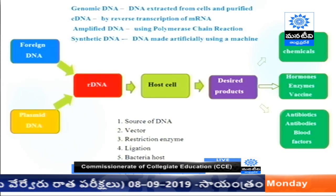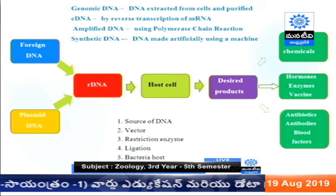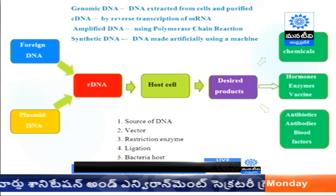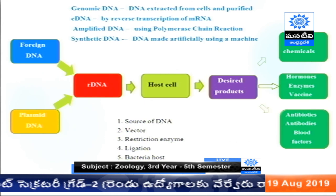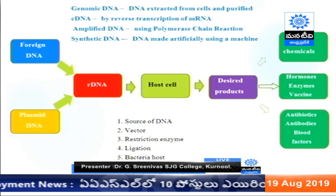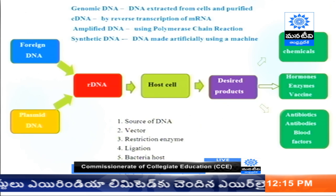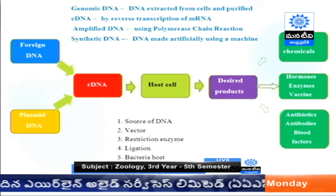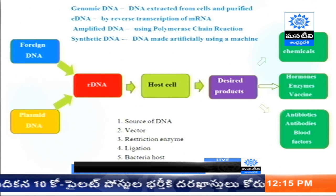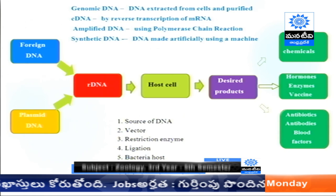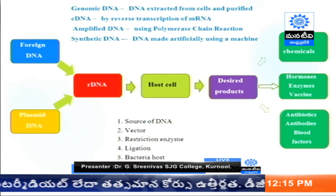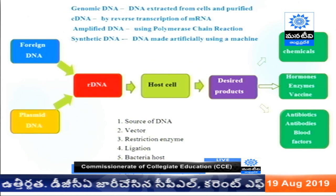rDNA technology is a technology where you take a DNA that you require — for example insulin, growth hormone, or any product gene — as a final product. You take the foreign DNA and insert it into a vector. Vectors may be of many kinds. This produces a new DNA called recombinant DNA, which is inserted into a host — generally bacteria — because they can be cultured quickly. From that culture you take the desired products, which may be chemicals, hormones, enzymes, antibiotics, or blood factors.